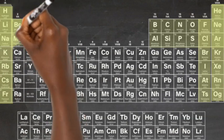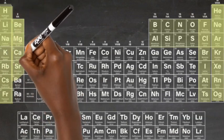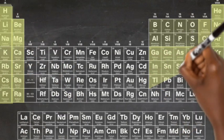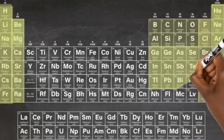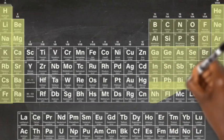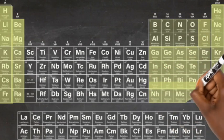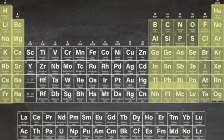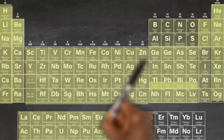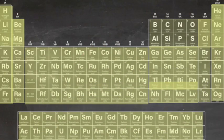Then do the same for alkali metals and alkaline earth metals. Once you have these secure, move on to the rest of the P block, transition metals by period, actinides and post-actinides, and you can safely leave the lanthanides to last.